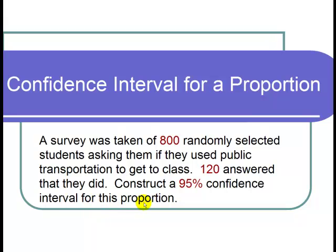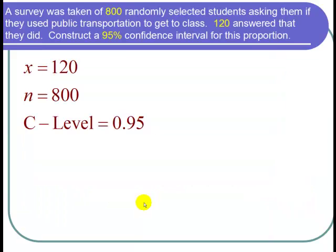So let's start out by writing our cast of characters. Since 120 of the students answered they took public transportation, that's the x, so x is 120. 800 students participated in the survey, that's the sample size, so n is equal to 800.